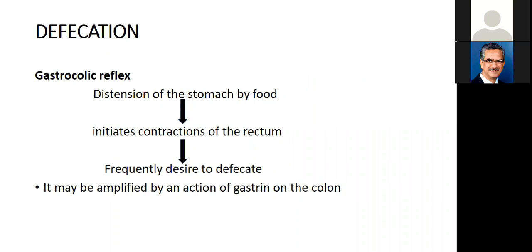The gastrocolic reflex: when the stomach is distended by food, it causes contraction of the rectum, leading to a desire to defecate. In patients with hyperacidity or excessive gastrin secretion, this reflex is exaggerated — as soon as they eat something they have an urge to pass stool. This is a clinical clue in history-taking that the patient may be suffering from hyperacidity.